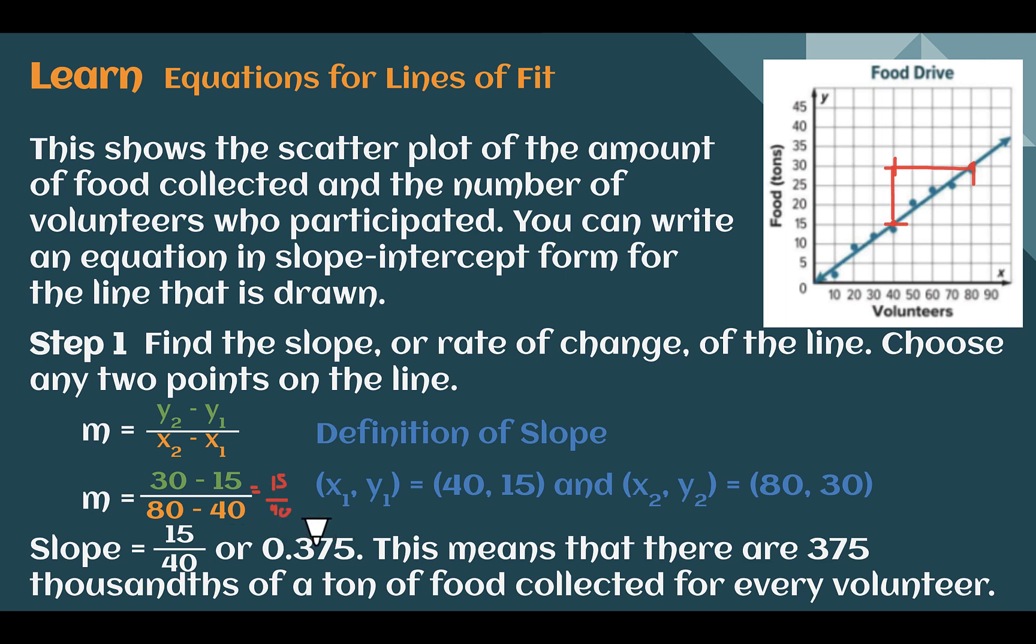If we're interpreting what the slope means, then based on our line, 0.375 would mean there are 375 thousandths of a ton for every volunteer. Or in other words, if there was only one volunteer, we would have 0.375 tons of food.